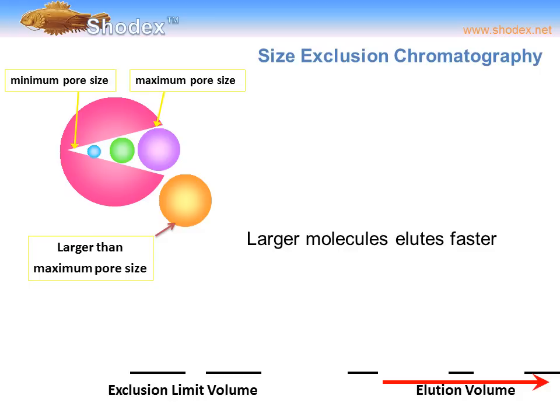The principles of size exclusion chromatography can be described fairly simply. In the upper left of the screen, we see a pink sphere representing a gel particle — the solid support of an SEC column. The particle has pores of a controlled size, larger on the surface and smaller toward the interior. Analytes of small size, such as the blue or green sphere, can penetrate deeply into the particle, whereas the purple sphere may only penetrate the surface. Thus, retention times differ: the blue sphere takes longer to elute than the green, and the green longer than the purple.